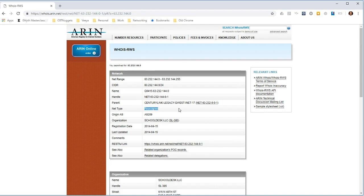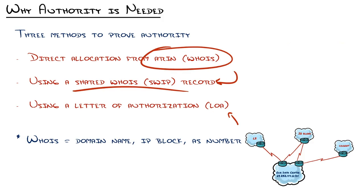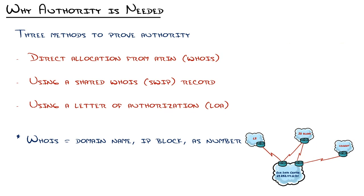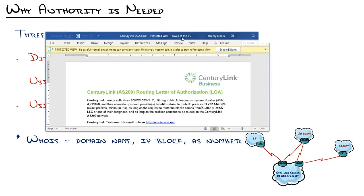Not all organizations accept the shared Whois record. When I was setting up BGP originally, Cogent took it just fine. But my friends at IO Data rejected me — they said a shared Whois record is not enough; we need a Letter of Authorization, or LOA, from Level 3. That's where you have to go to the carrier and get something like this.